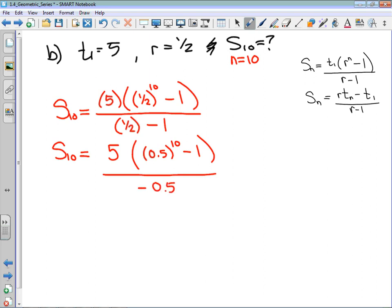If you have your calculator at hand, you could take 5 and divide it by negative 0.5, and I get that the sum is negative 10 times 0.5 to the power of 10 minus 1. Just like before, this is going to look a little ugly on the calculator. I'm going to do the inside of that bracket first: 0.5 to the power of 10 minus 1.